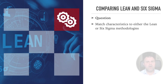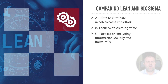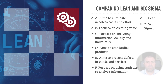Can you match characteristics to either the Lean or Six Sigma methodologies? The options are: aims to eliminate needless cost and effort; focuses on creating value; focuses on analyzing information visually and holistically; aims to standardize products; aims to prevent defects in goods and services; and focuses on using statistics to analyze information. Lean focuses on eliminating needless cost and effort, on providing goods and services that customers find valuable, and on using holistic visual analyses. Six Sigma aims to dramatically reduce or eliminate defects and variation, and focuses on the use of statistical tools to analyze information.